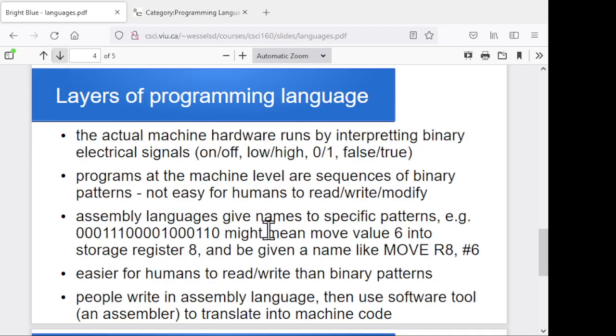Now, there are a ton of different layers of programming language. At the very bottom level, the hardware that you're working with essentially interprets a bunch of binary signals. It's looking at a bunch of different signals that are voltage high, voltage low, on, off, true, false, high, low, however you want to think about this. It's this collection of different binary signals.